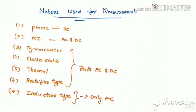Different types of meters used for measurement: PMMC (permanent magnet moving coil) instruments are used for measuring DC. MI (moving iron) instruments measure both AC and DC. Dynamometer type, electrostatic, thermal, and rectifier type measuring instruments all measure both AC and DC. Induction type measuring instruments measure only AC.